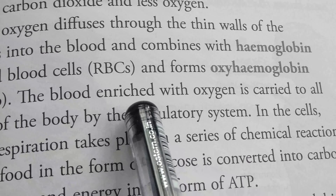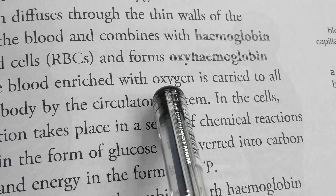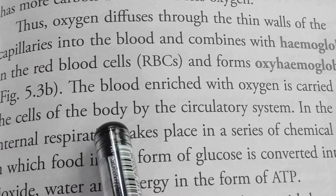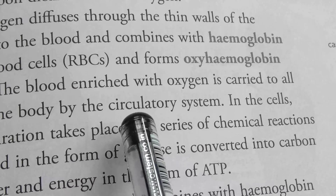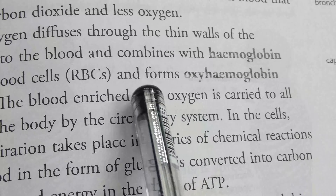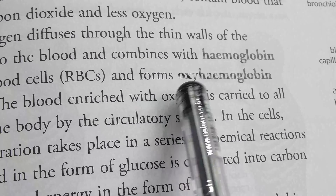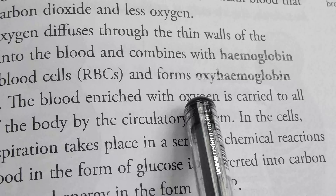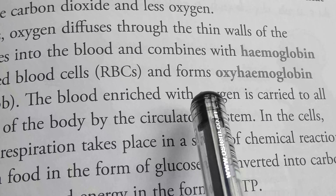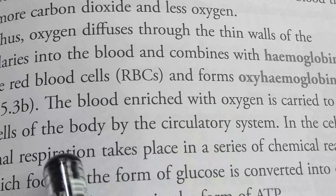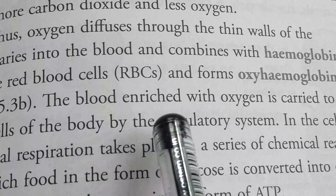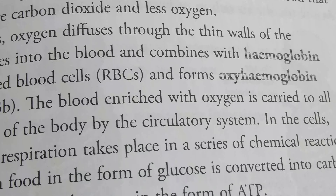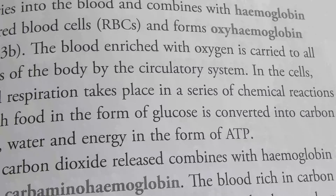The blood enriched with oxygen is carried to all cells of the body by the circulatory system. After the formation of oxyhemoglobin, this oxygen-rich blood is spread throughout the body surface by the circulatory system.